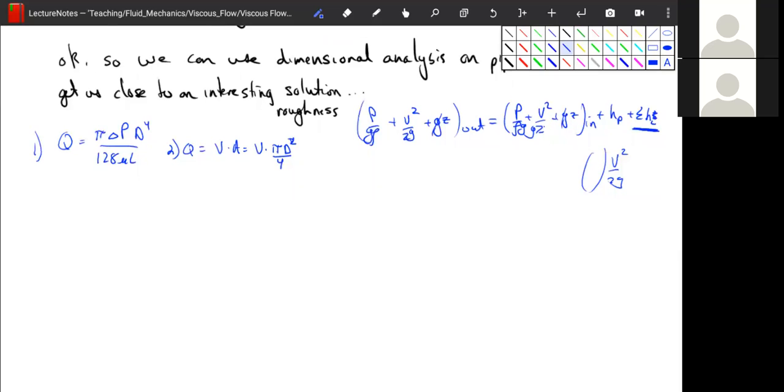So 1 plus 2 into 3. And with 3, we get that v times pi d squared over 4 is equal to pi delta p d to the fourth divided by 128 mu times l. And now we can do some simplification.